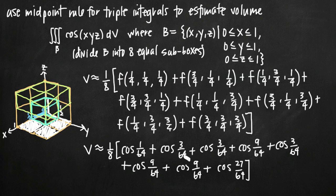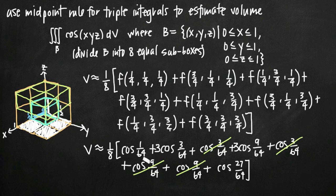We can simplify by combining like terms: cos(1/64) appears once, cos(3/64) appears three times, cos(9/64) appears three times, and cos(27/64) appears once. It's really important that your calculator is in radian mode for this calculation, otherwise you'll get a different answer. Adding all terms together and multiplying by 1/8, the volume is approximately 0.985, which is our estimate for the volume of cosine of x·y·z over the solid box defined by B.